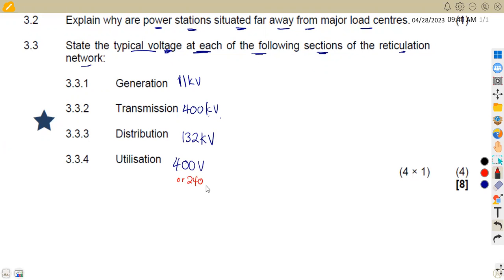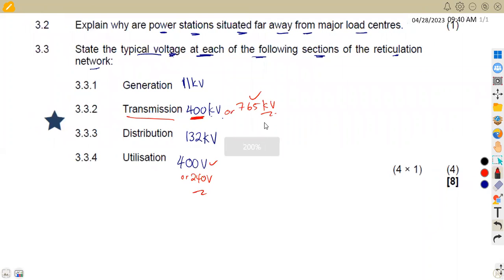This normally at 400 but it can be at 240 volts. Same with the transmission, we can also have this at 765 kilovolts, which is also part of your solution. They will also mark this one. So these are the typical voltages that we have at each of the following sections that we're given in the reticulation network.